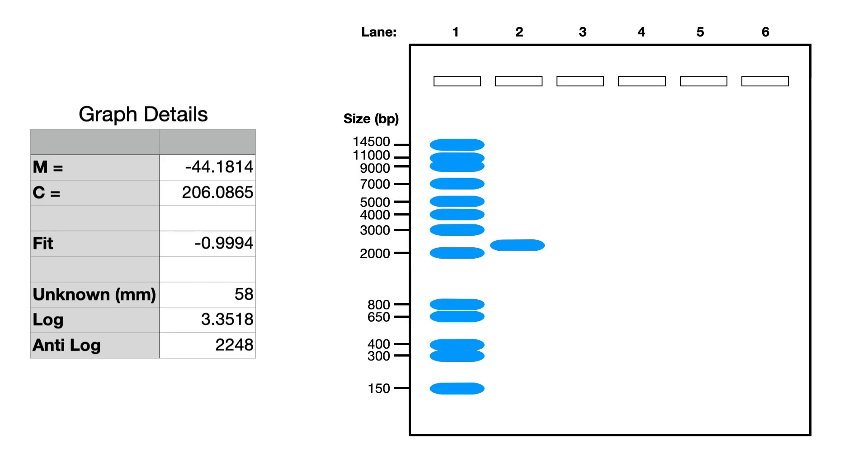And so if we go back and look at our original gel and we look at our unknown, we can see that that value of about 2200 is about right because our unknown is just above the 2000 and has not quite reached the 3000, so we can be confident that that value is right.